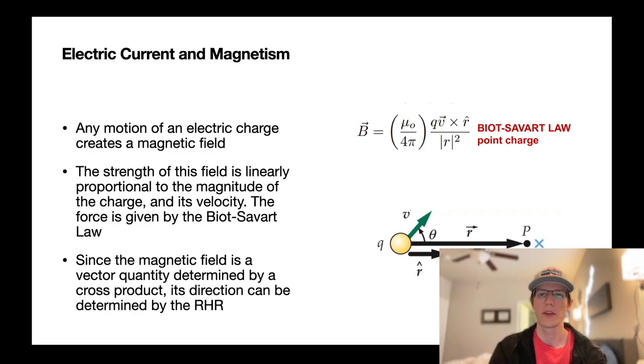And you can see there, the strength of a magnetic field is given by the Biot-Savart law. This form is in the form of a point charge. You can see it's proportional to the magnitude of the charge and the velocity. And since it's determined by a cross product, you can use a right-hand rule to determine the direction of the magnetic field from it.